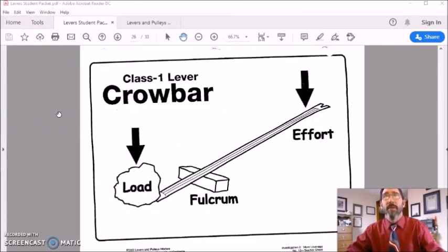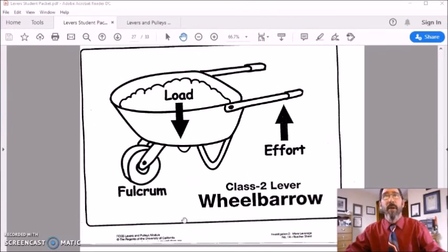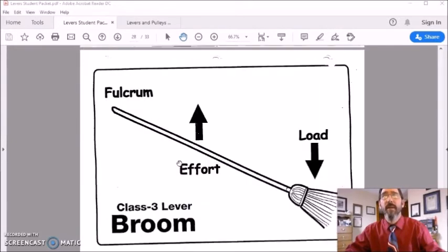A crowbar is a great example of a first class lever, fulcrum in the middle. A wheelbarrow is a great example of a second class lever, load in the middle. And a broom is a good example of a third class lever, effort applied between the fulcrum and the load.